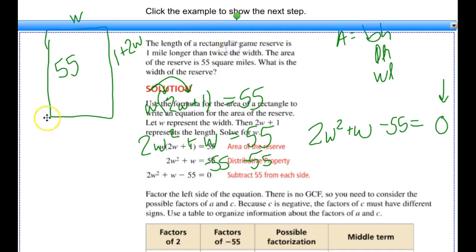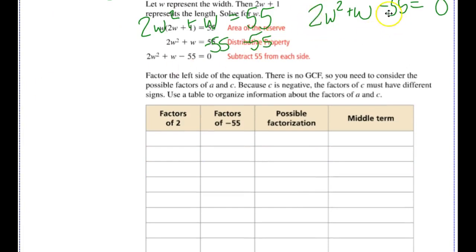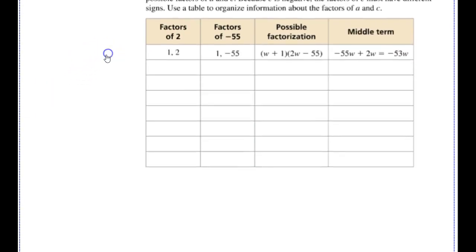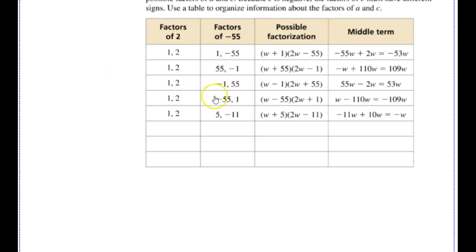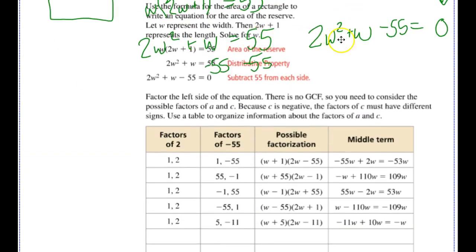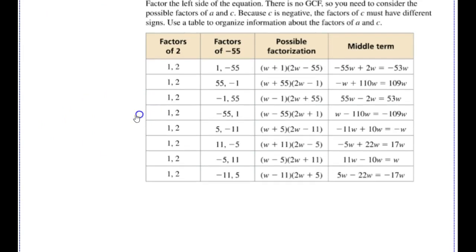Using my table, I work with factors of 2 and possible factors of negative 55. My possible factors of 2 are 1 and 2. For negative 55, I list four sets: 1 and negative 55, 55 and negative 1, negative 1 and 55, and negative 55 and 1. When you have a negative c value, you should have four lines in your chart for each set of factors of a — always at least four entries to make sure you don't miss any.